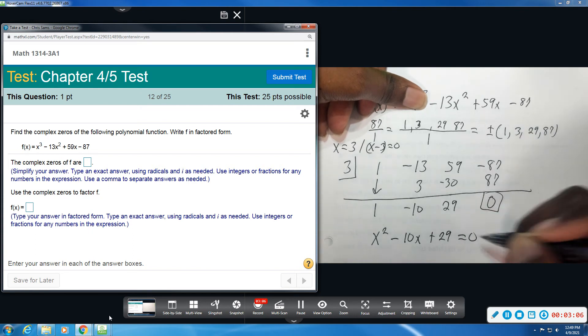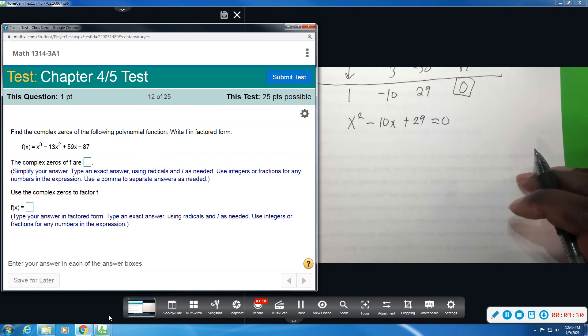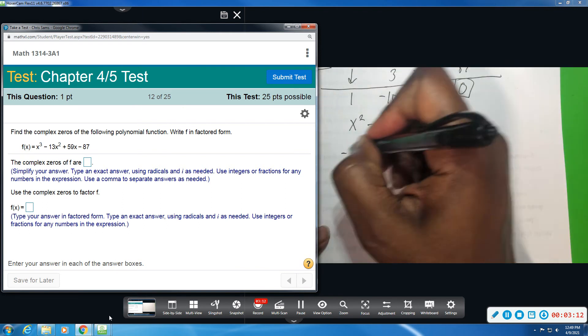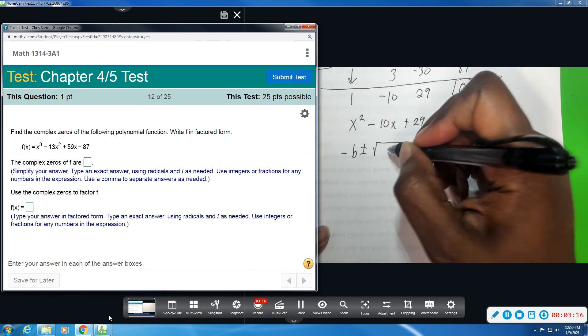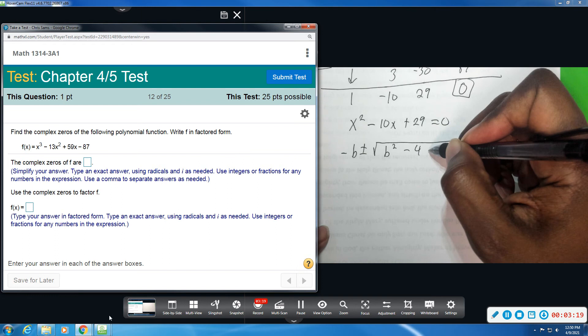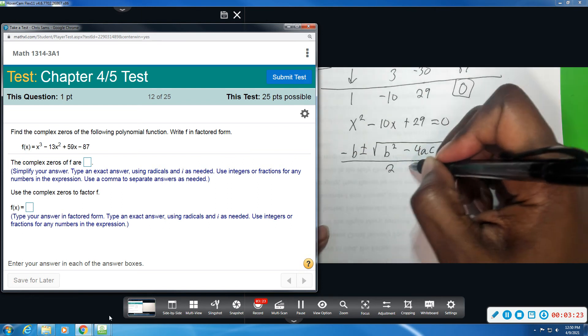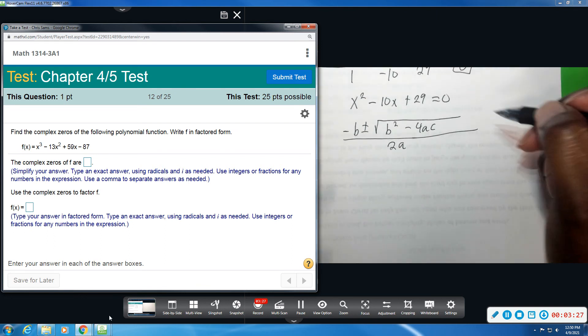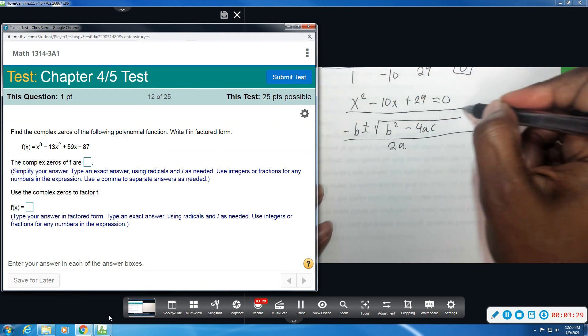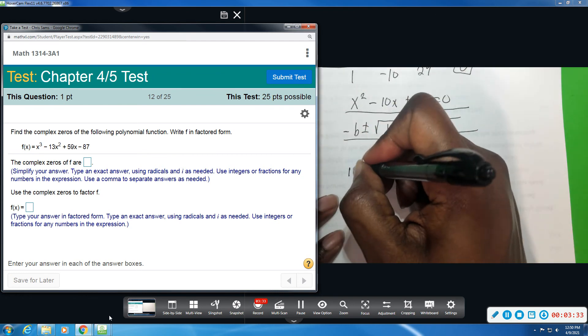And we set this equal to 0. And we're going to do quadratic formula. And so that is -b ± √(b² - 4ac) all divided by 2a. All right, so I'm going to start plugging this in using the remaining polynomial. So b is -10. When I plug it in, it will be a positive 10.